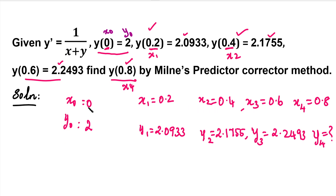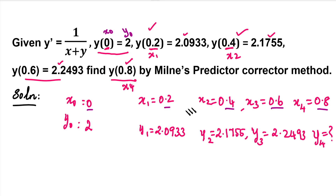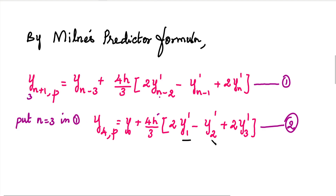There are 5 x values: 0, 0.2, 0.4, 0.6, and 0.8. There is a common difference between these values. If we subtract two consecutive values, we get h equal to 0.2. This is the step value. The answers we need are y1-dash, y2-dash, and y3-dash — we will substitute these three values.